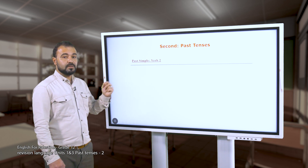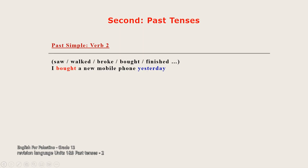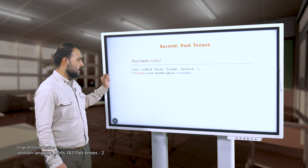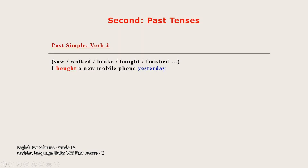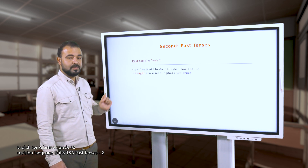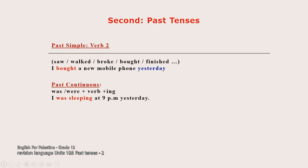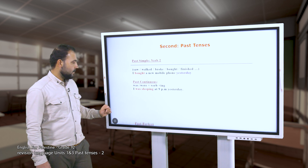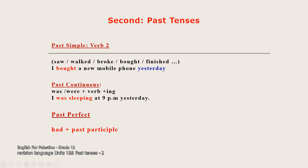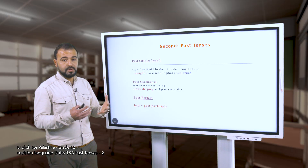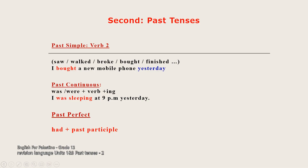The past simple tense uses verb 2, the second form of the verb - for example: walked, broke, bought, finished, etc. The past continuous form uses 'was' or 'were' plus the verb plus the -ing form - for example: 'I was sleeping at 9 p.m. yesterday.' For the past perfect, we use 'had' plus the past participle form.